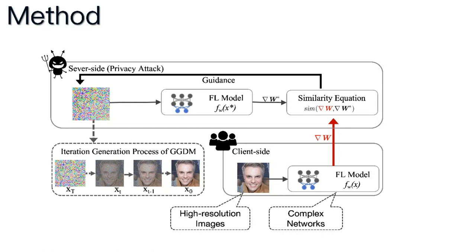We present the Gradient-Guided Diffusion Model, a new approach derived from denoising diffusion probabilistic models. The process starts with clients sending gradients to the server, which then guides a pre-trained DDPM with these gradients to regenerate images. After several iterations, we achieve images closely matching the original private data.